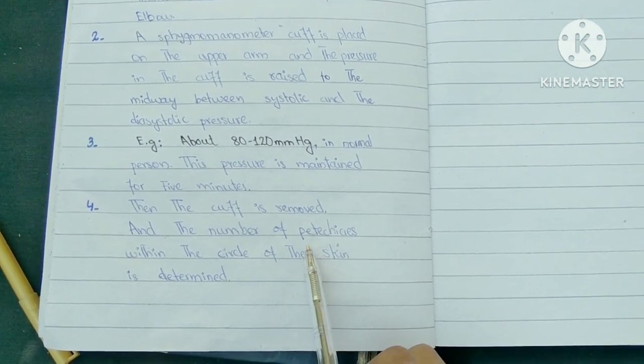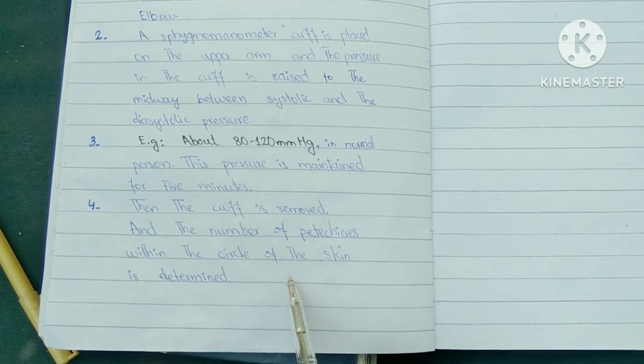Fourth, then the cuff is removed and the number of petechiae within the circle of the skin is determined.